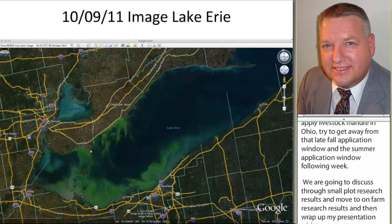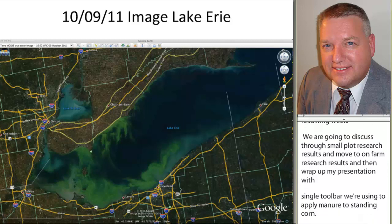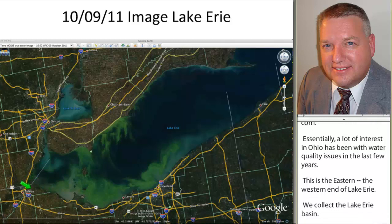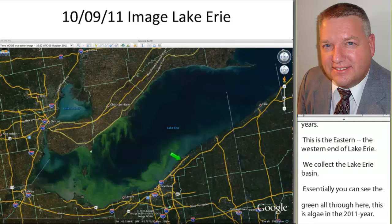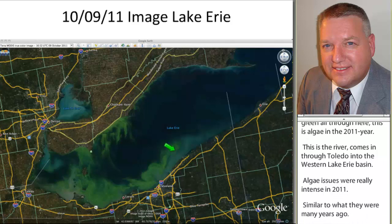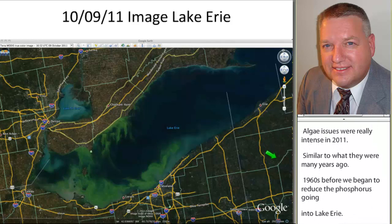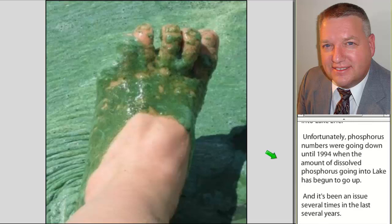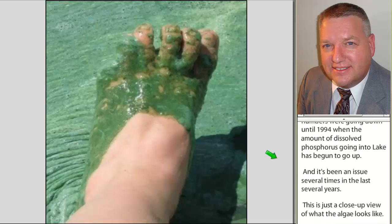A lot of the interest in Ohio has been with water quality issues in the last few years. This is the western end of Lake Erie — we call it the Lake Erie Basin. You can see the green all through here; this is algae in 2011. The Maumee River comes in here through Toledo into the western Lake Erie Basin. The algae issues were really intense in 2011, similar to what they were in the 1960s before we began to reduce the phosphorus going into Lake Erie. Unfortunately, phosphorus numbers were going down until 1994, when the amount of dissolved phosphorus going into the lake began to go up.